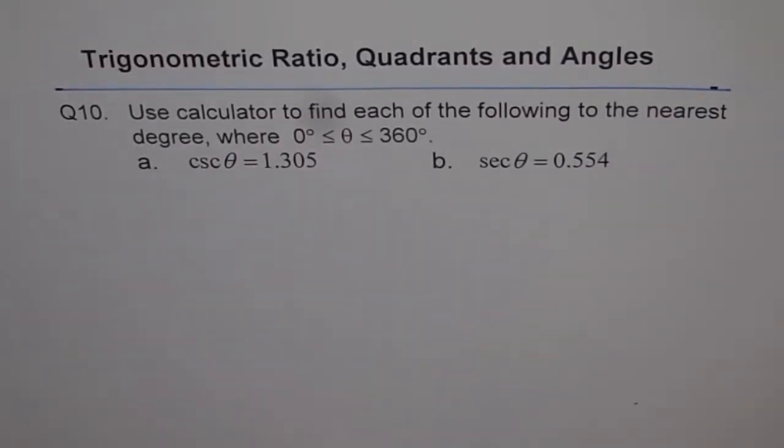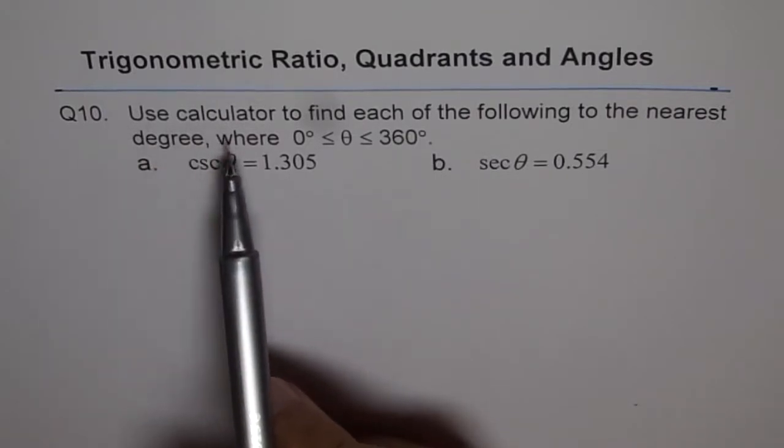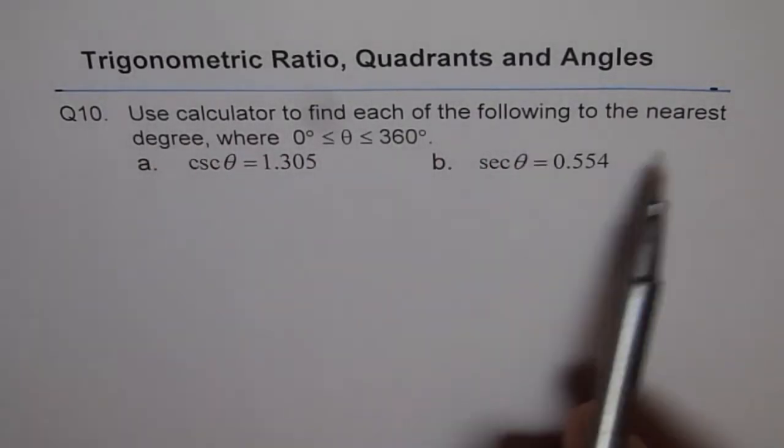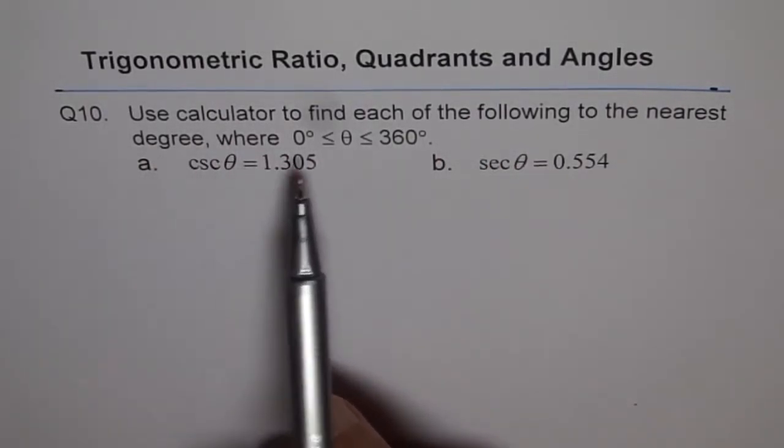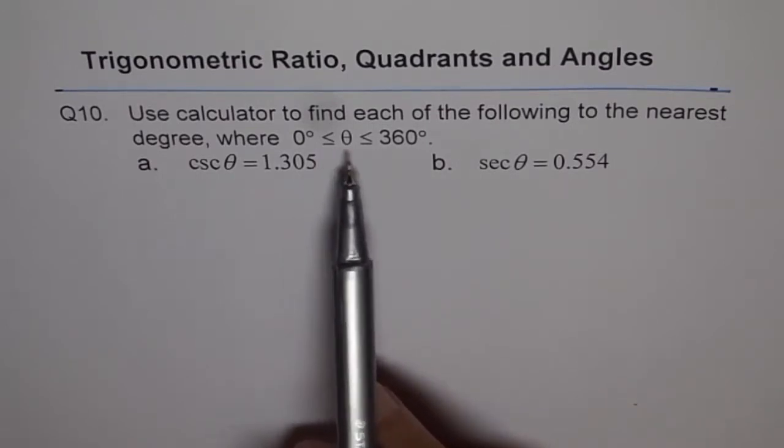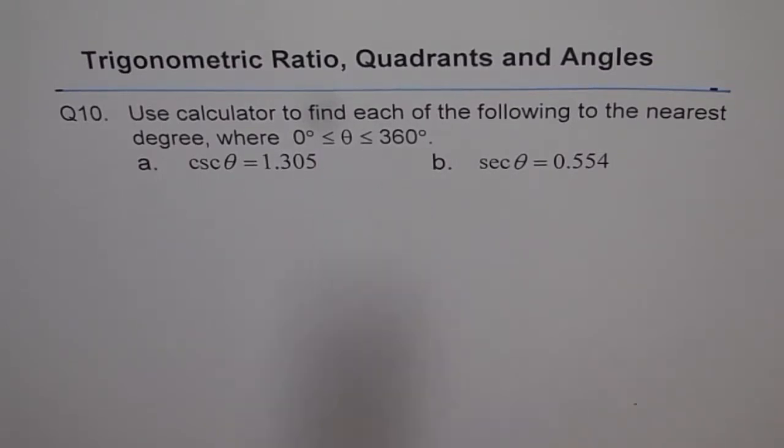Trigonometric ratio, quadrants and angles. Question 10. Use calculator to find each of the following to the nearest degree, where theta is greater than or equal to 0 and less than or equal to 360 degrees.